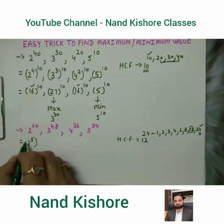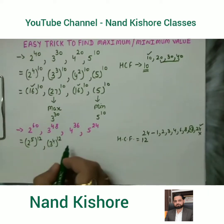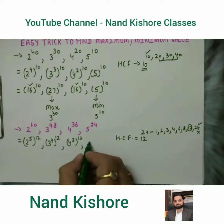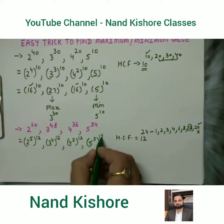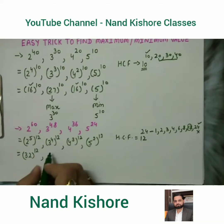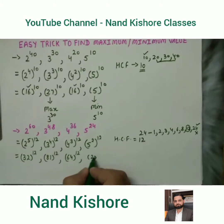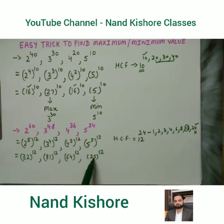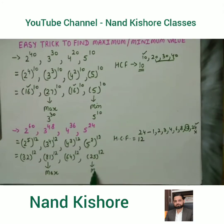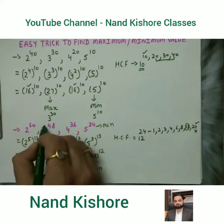Now we rewrite each term with power 12: 2^60=(2^5)^12, 3^48=(3^4)^12, 4^36=(4^3)^12, 5^24=(5^2)^12. Solving the internal values: 2^5=32, 3^4=81, 4^3=64, 5^2=25. Comparing bases 32, 81, 64, 25 — the maximum is 81, so 3^48 is the maximum, and 25 is the minimum, so 5^24 is the minimum.